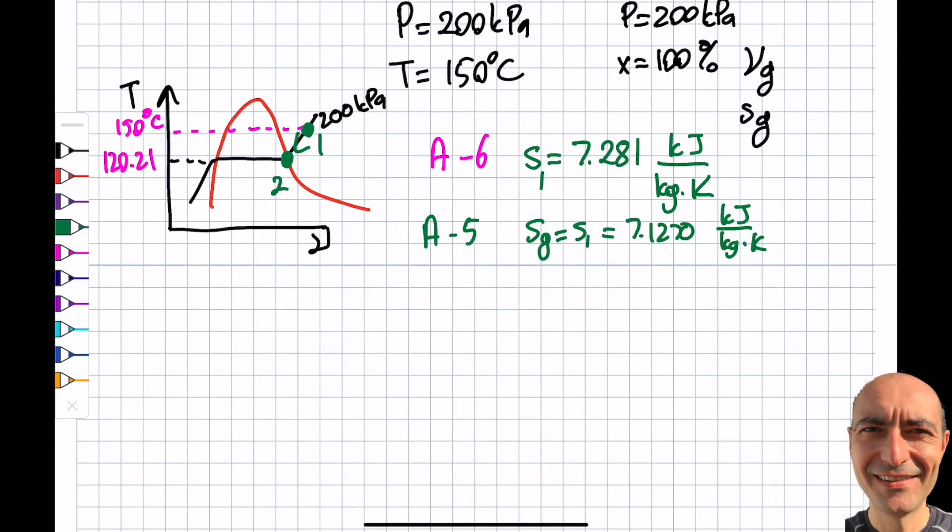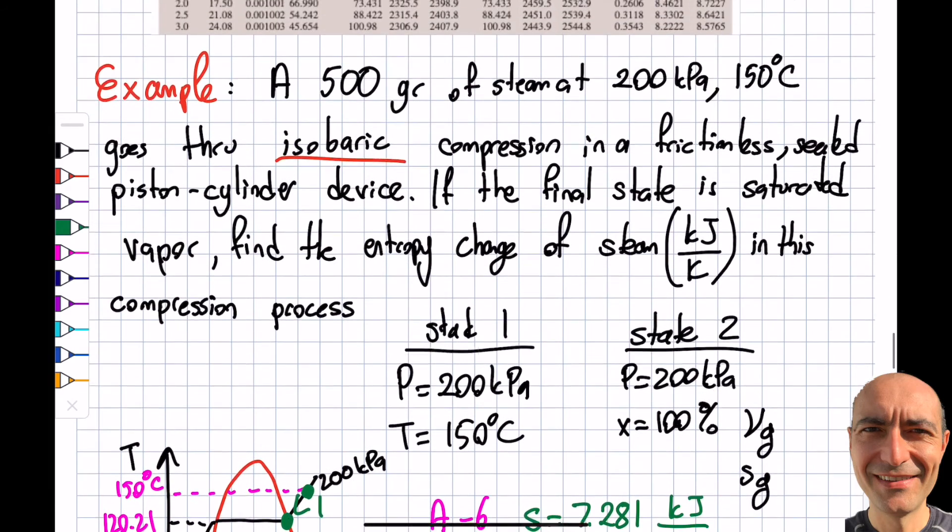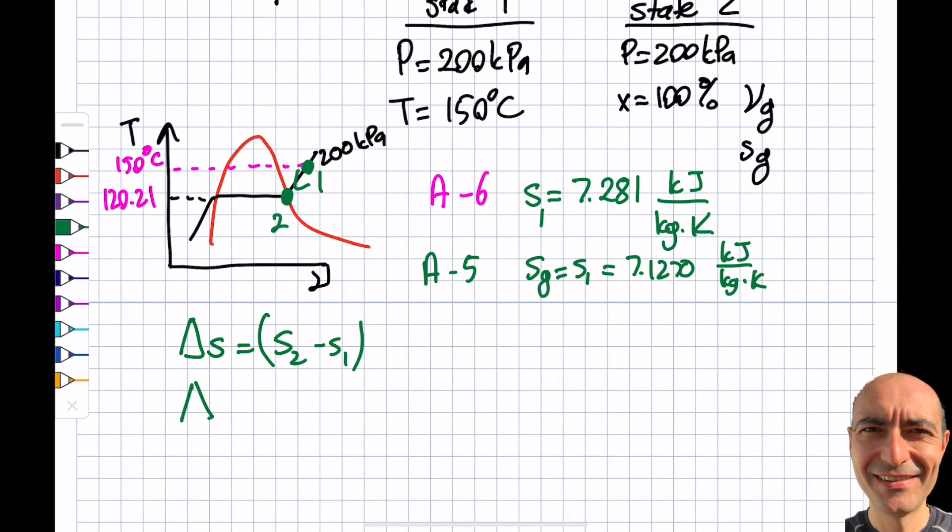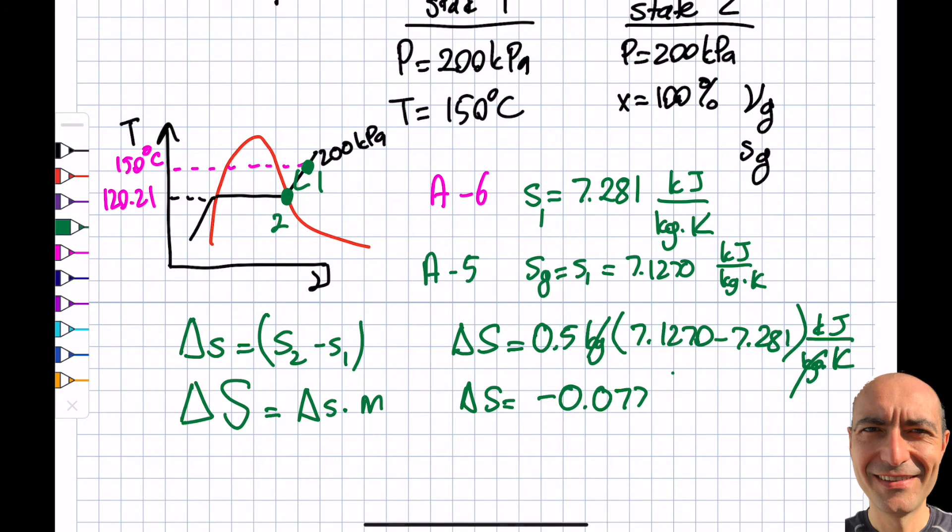So then I'll look at delta S, which is S2 minus S1. But this is not sufficient. The units are kilojoules per kilogram Kelvin, but the question asks for kilojoules per Kelvin. They're asking for capital S, not lowercase s. So I need capital delta S, which equals lowercase delta S times the mass. Not a big deal—it's the same as before. So capital delta S equals 0.5 kilograms times (7.1270 minus 7.281). I get delta S equals negative 0.077 kilojoules per Kelvin.